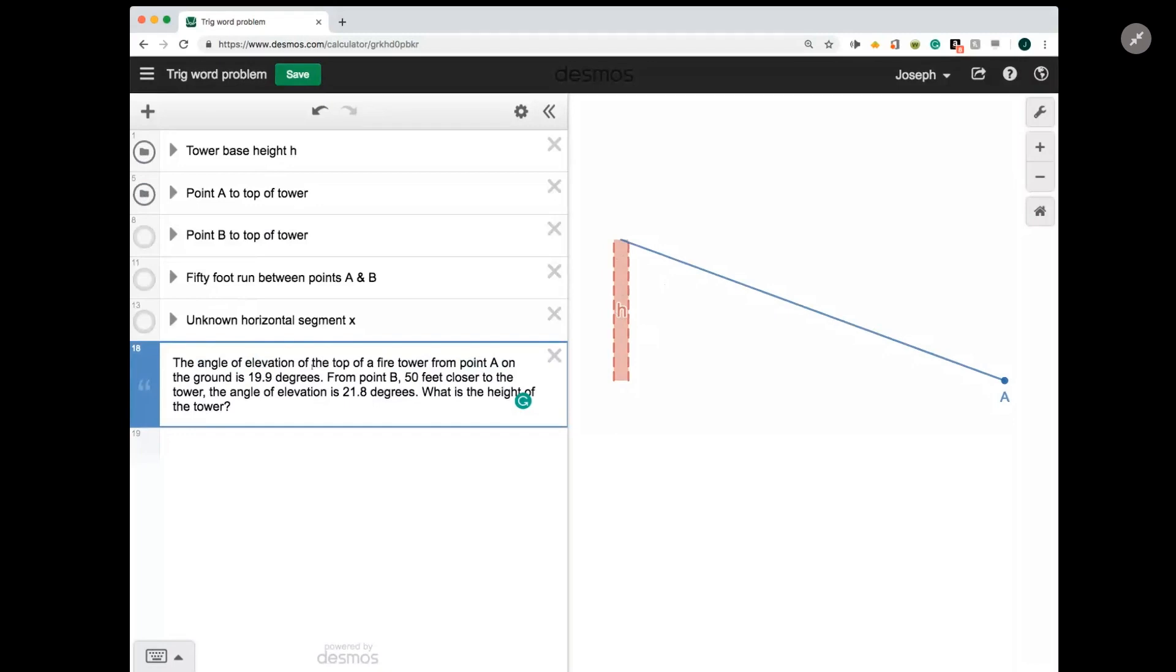And then it says that from a point B, which is 50 feet away, well, it says it's 50 feet closer to the tower, which means it's 50 feet away from point A, says the angle of elevation is a little steeper, 21.8 degrees, and that would look like this.